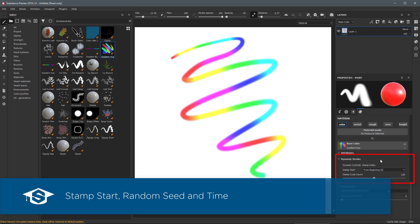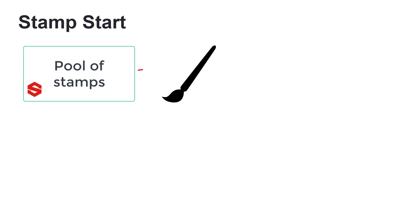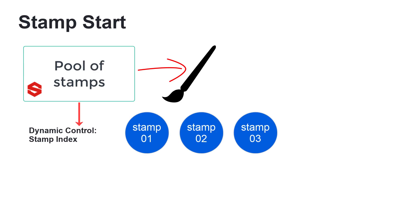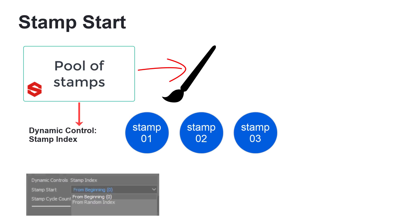There are three types of Dynamic Controls. In this video we are going to look at the two that you will most likely use. First we will look at the Stamp Start. A Substance File can generate a pool of stamps to be used by the brush. The Stamp Start is only available if the Substance File has the Stamp Index dynamic control. The Stamp Index is the ID for the stamps being generated by the Substance File.